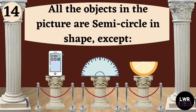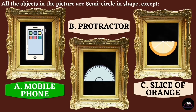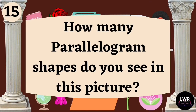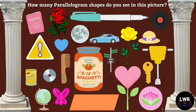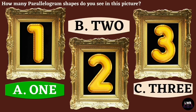Question number fourteen: all the objects in the picture are semicircle in shape except — the correct answer is letter A, mobile phone. Question number fifteen: how many parallelogram shapes do you see in this picture? The correct answer is letter A, one.